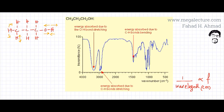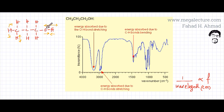One thing about infrared spectra is that it's actually very hard to extract information, because it's going to be very confusing. Lots of absorptions would be happening since there are lots of bonds absorbing many different frequencies for stretching, contracting, and vibrating. So the infrared spectrum usually is very confusing and you're not able to extract a lot of information from it.